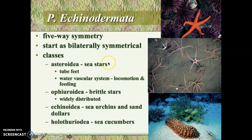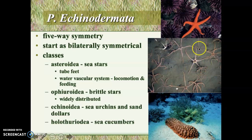The echinoderms are among the most complex of the organisms without a true skeleton. They have five-way symmetry, which also incorporates a bilateral — one side versus the other — symmetry. The echinoderms include the sea stars in the upper right-hand corner, the brittle stars in the center, and also sea urchins — the purple things also visible in the upper right. On the lower right is a sea cucumber. All of these critters belong to Phylum Echinodermata.